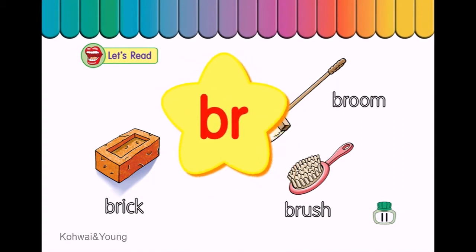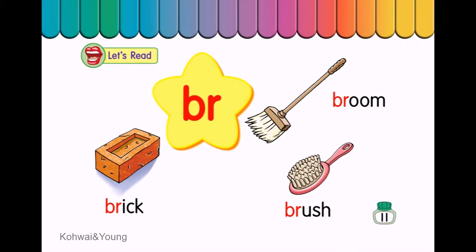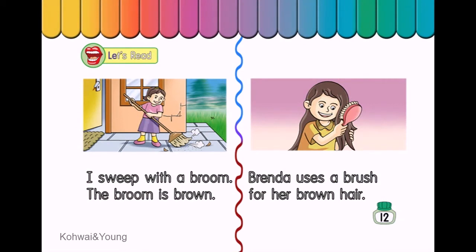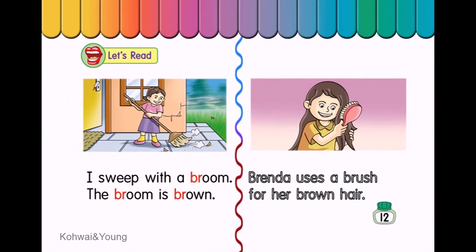Let's read. Br — I sweep with a broom. The broom is brown. Brenda uses a brush for her brown hair.